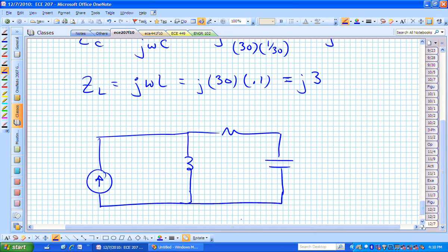And we are able to now write a phasor circuit. What's our capacitor impedance? That was minus j. Our inductor's impedance was j3. What do we need for the current source? We need the magnitude, which was five, and we need its angle, which was zero. And on the side of the paper, if we need to go back into the time domain, we need to remember that omega was equal to 30.